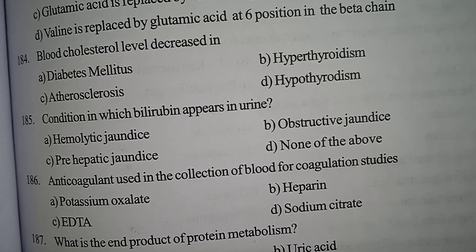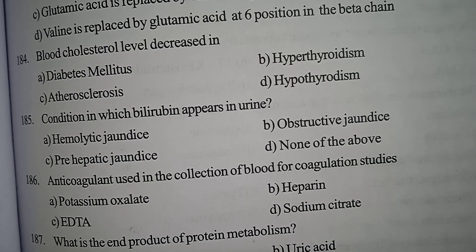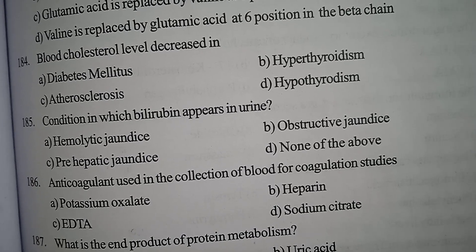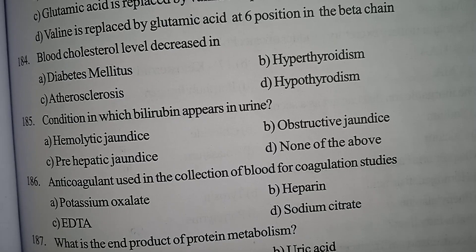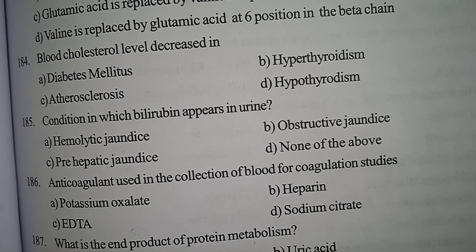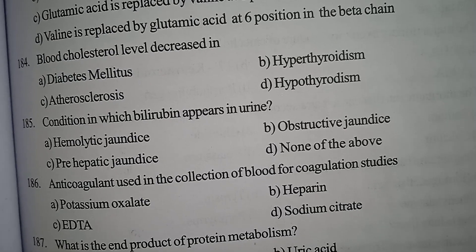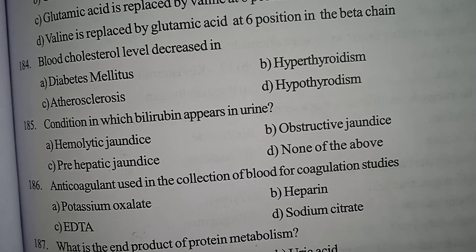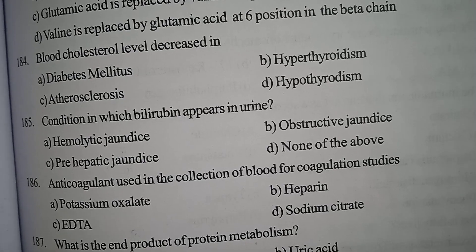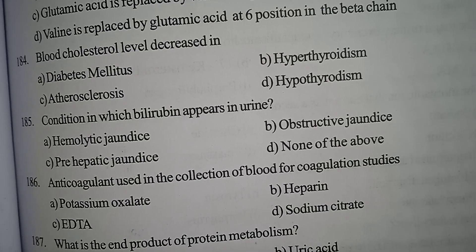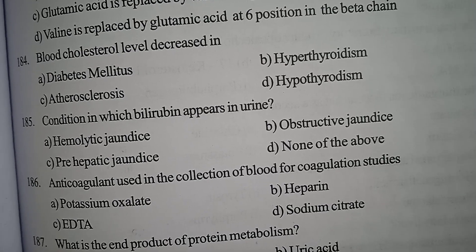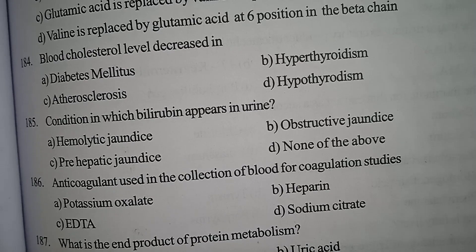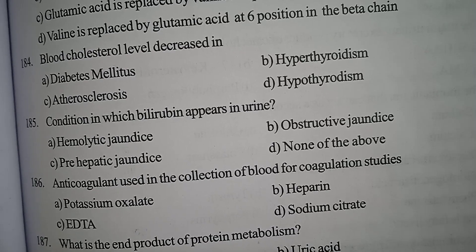Next one. Anticoagulant used in the collection of blood for coagulation studies: Option A: Potassium oxalate. Option B: Heparin. Option C: EDTA. Option D: Sodium citrate.